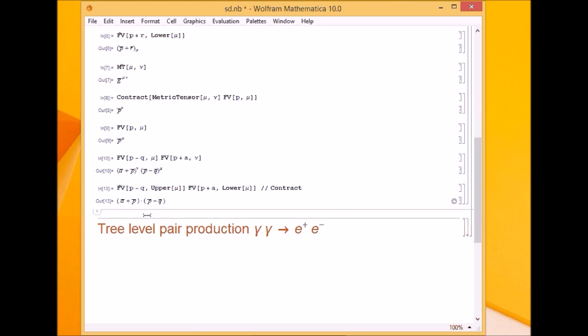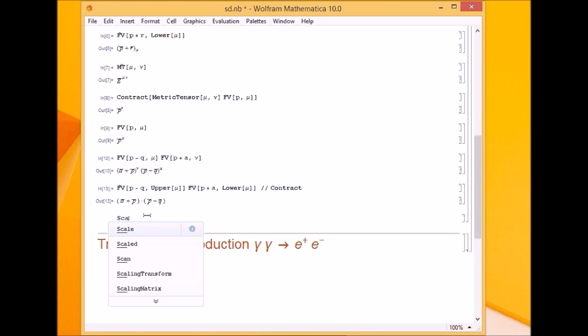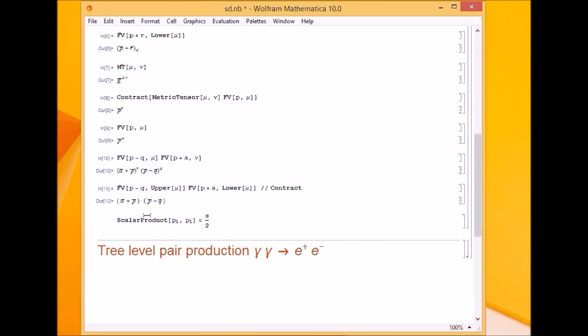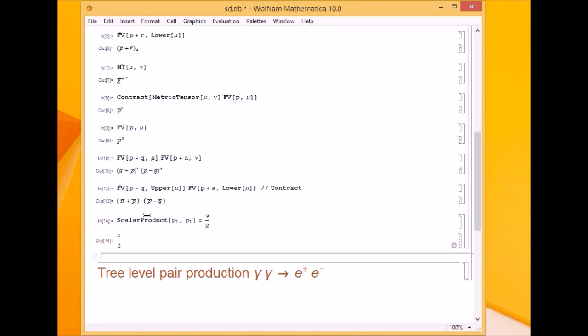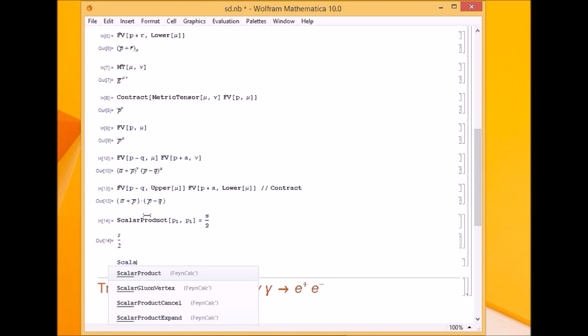Sometimes I may need to expand the scalar products. Before doing that, FeynCalc has a scalar product function. It's ScalarProduct. Suppose I define something p1.p1, I define it as s/2. Because m I will use later for mass. So p1 square is defined as s/2.